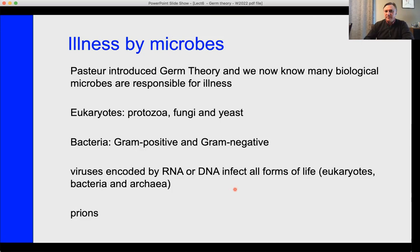We have a theory referred to as germ theory. Clearly stated, germ theory can involve any microbe, and the microbe will cause illness. For example, you can have protozoa, yeast, bacteria, viruses, or prions — all causing infection or illness.